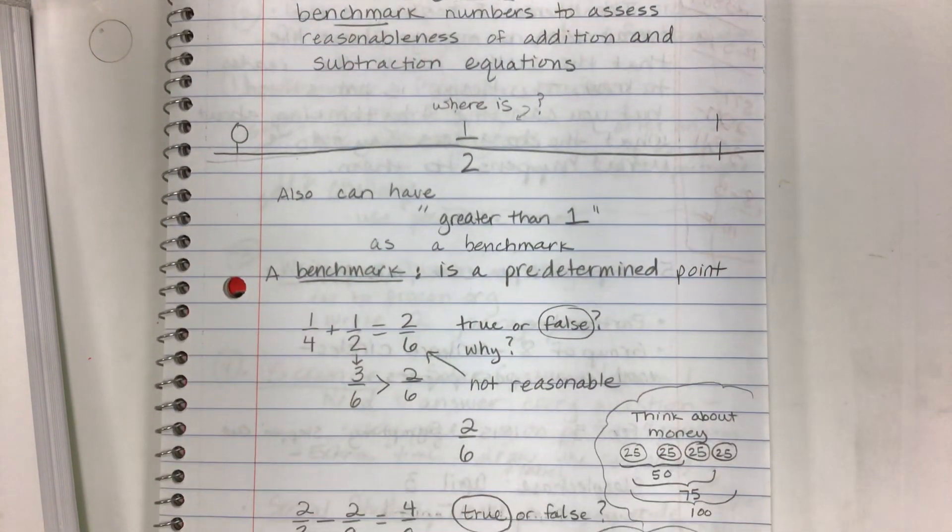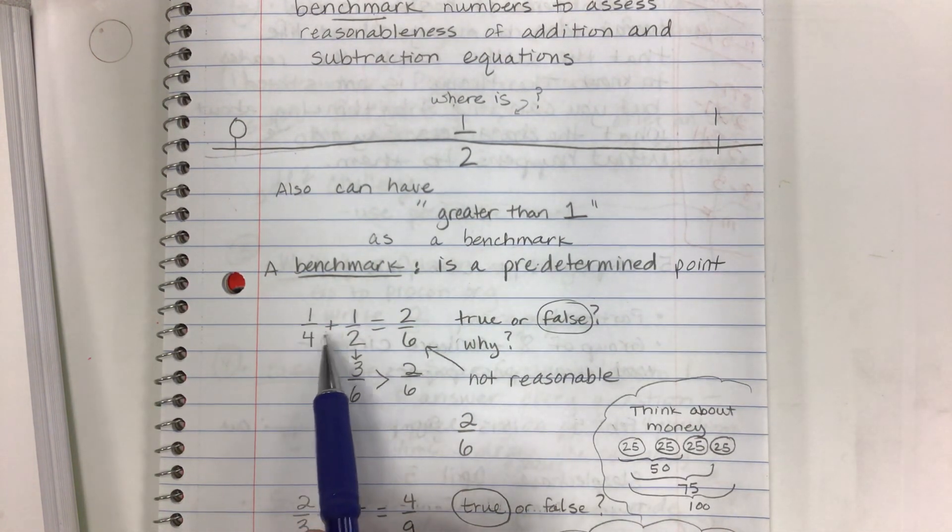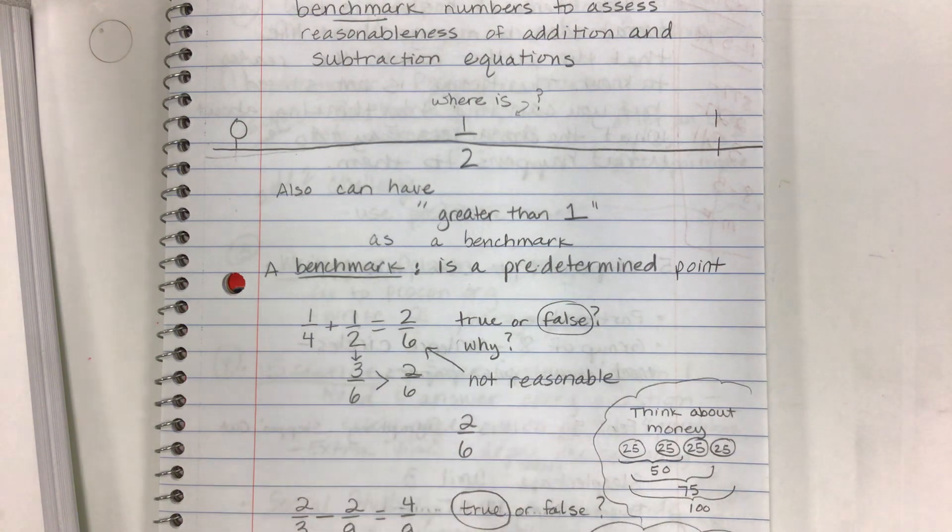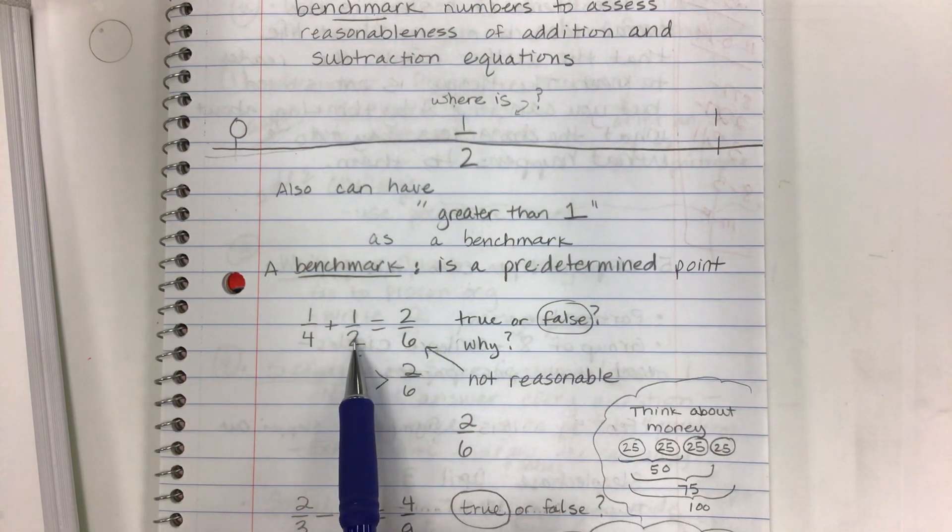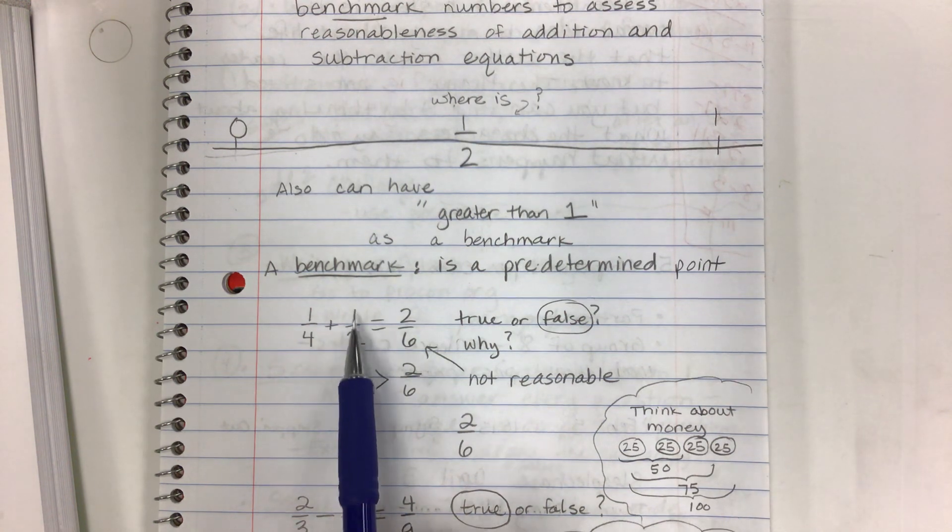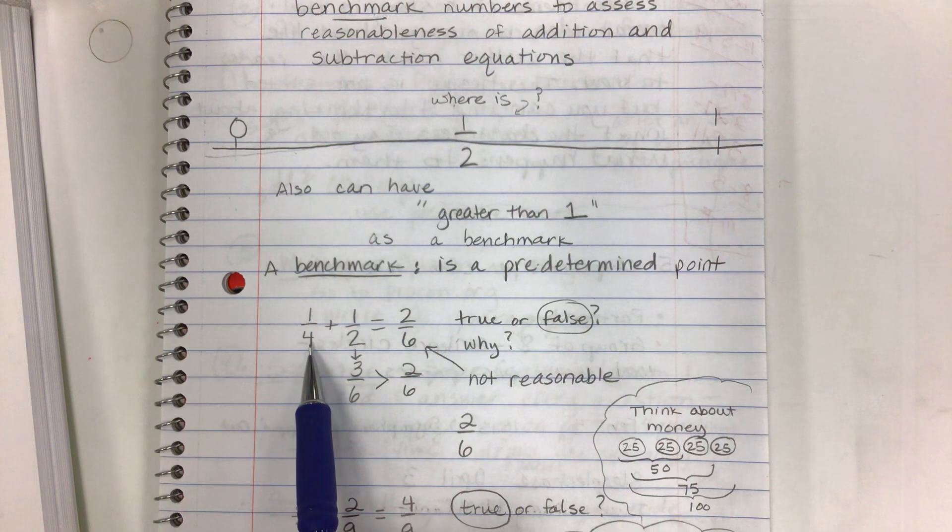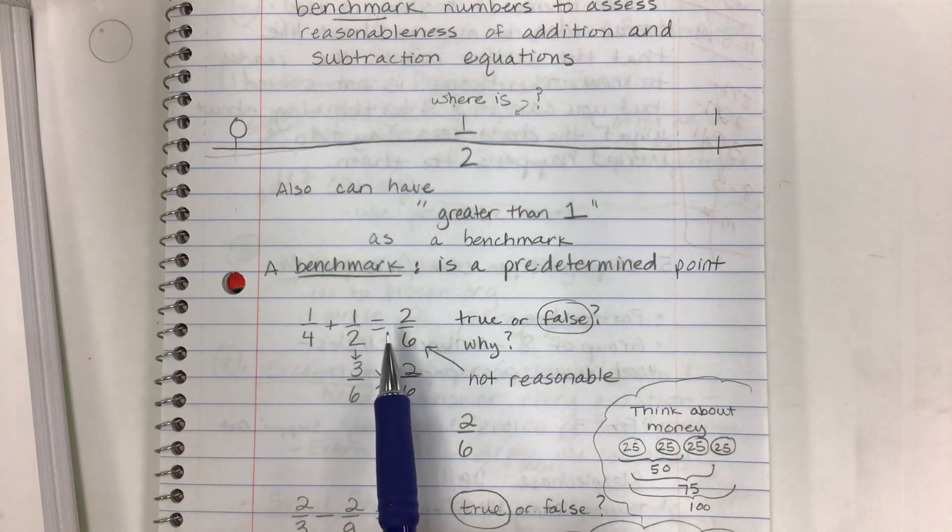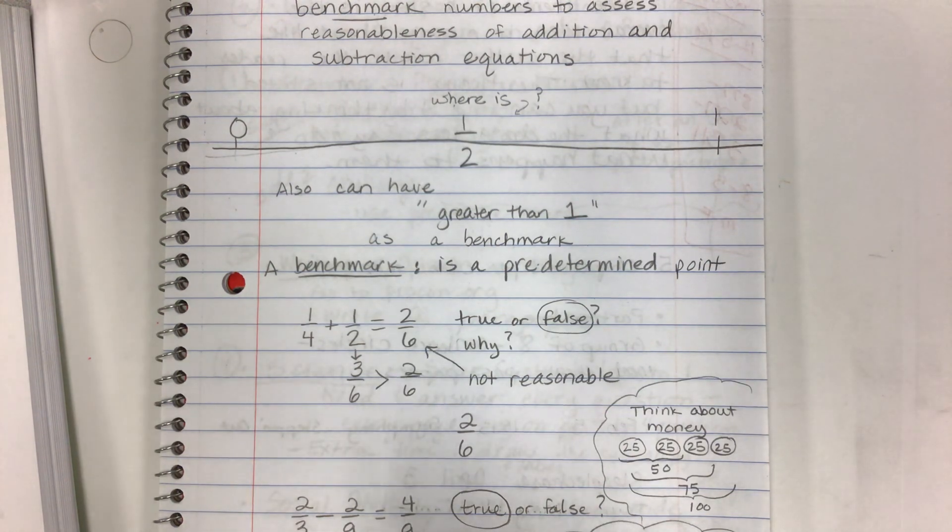And so in this fraction, this addition problem, you might say okay, well if I have one fourth plus one half, will my answer be greater than or less than one or greater than or less than a half? And so you have to just think about, well, it's going to be greater than a half because I already have a half and then I'm adding something that's less than half. So my answer will be less than one, but it'll be greater than a half.